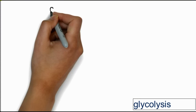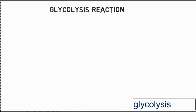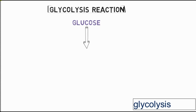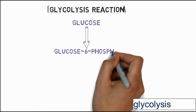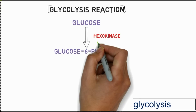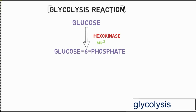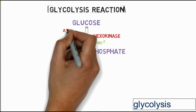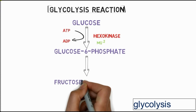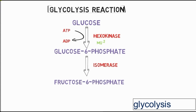Now let's go through the glycolysis reactions. First, the glucose molecule — a six-carbon compound — is converted into glucose-6-phosphate by the enzyme hexokinase, which contains Mg²⁺ as a cofactor. In this reaction, ATP is converted into ADP. Next, glucose-6-phosphate is converted into fructose-6-phosphate by the isomerase enzyme, which also contains Mg²⁺ as a cofactor.